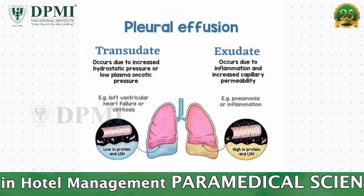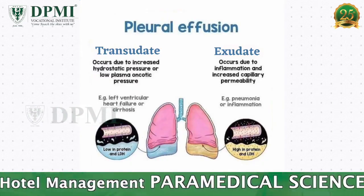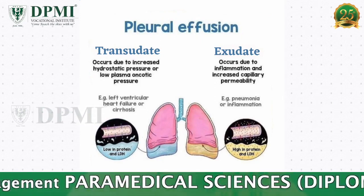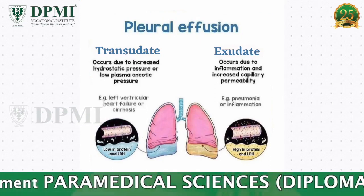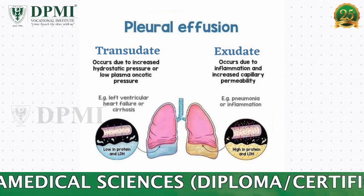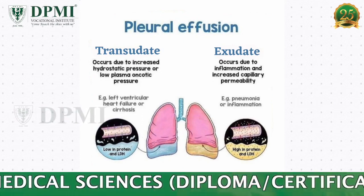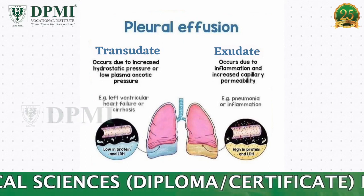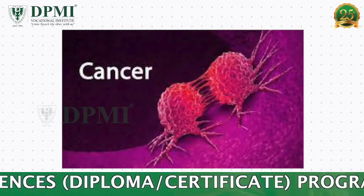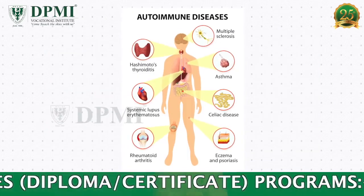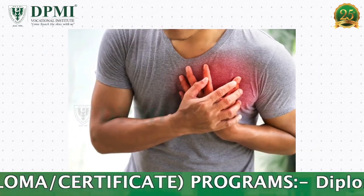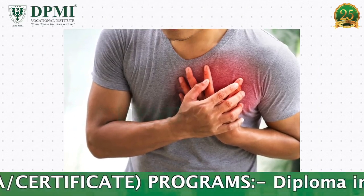The second type is exudate. This happens when there is an injury or inflammation of the pleura, which can make excess fluid leak out of certain blood vessels. Exudate pleural effusion has many causes, including infections such as pneumonia, cancer, kidney disease, and autoimmune diseases.